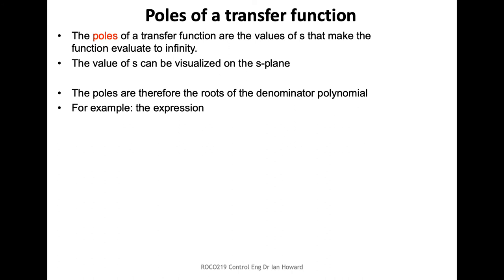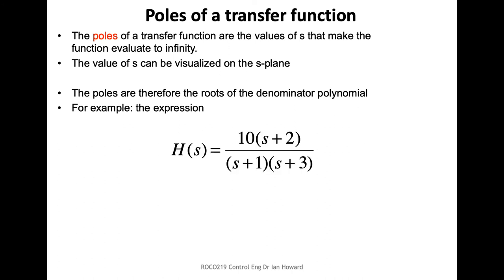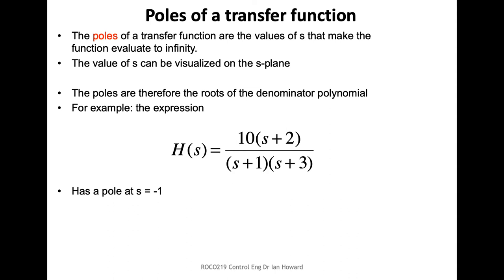Looking at the expression for a transfer function, what are the values of S that set this thing to infinity? In order for this expression to go to infinity, we want the denominator to go to zero. Values of S which set the denominator to zero will set the overall expression to infinity. In this particular example, we've got a denominator term of S plus 1 times S plus 3.